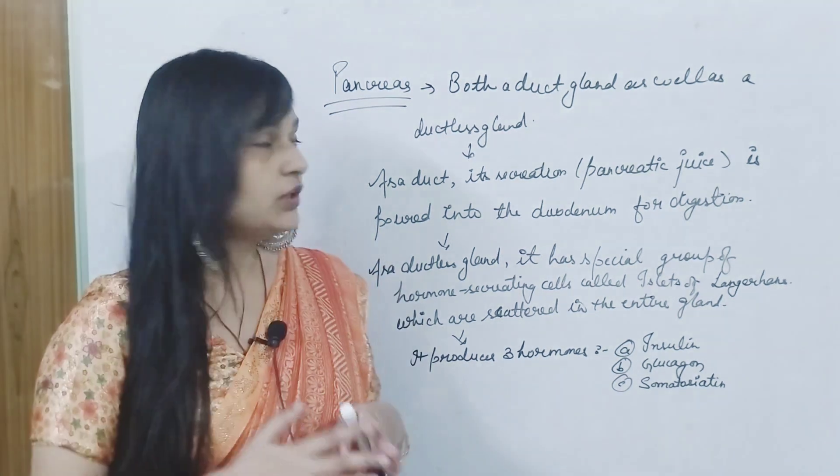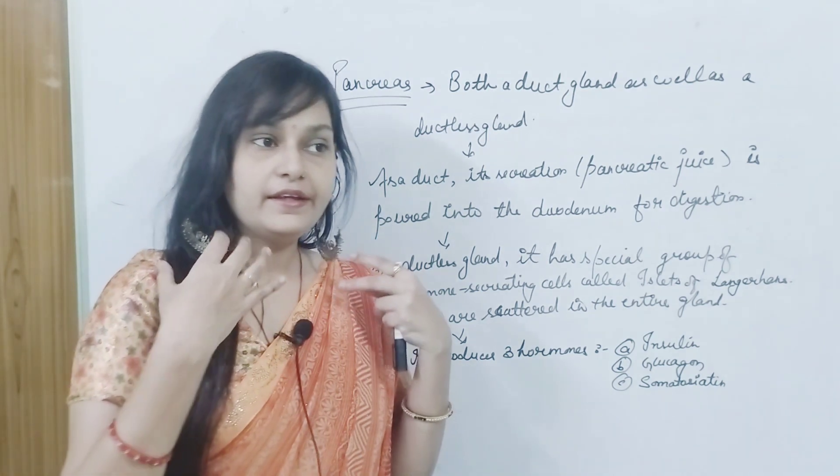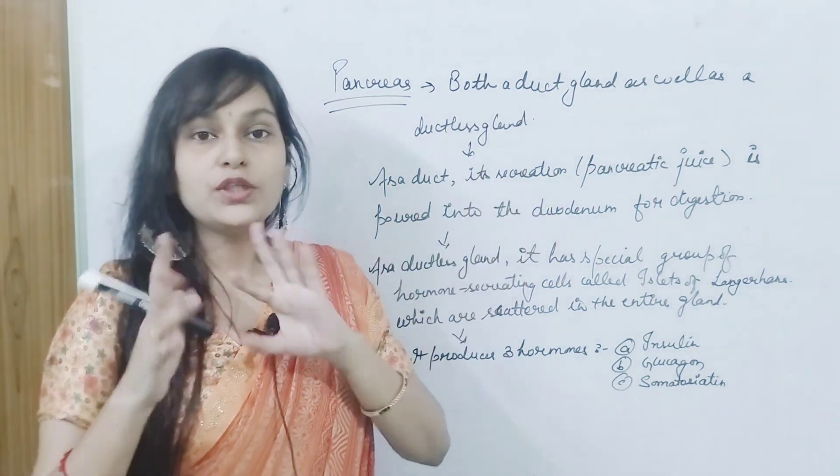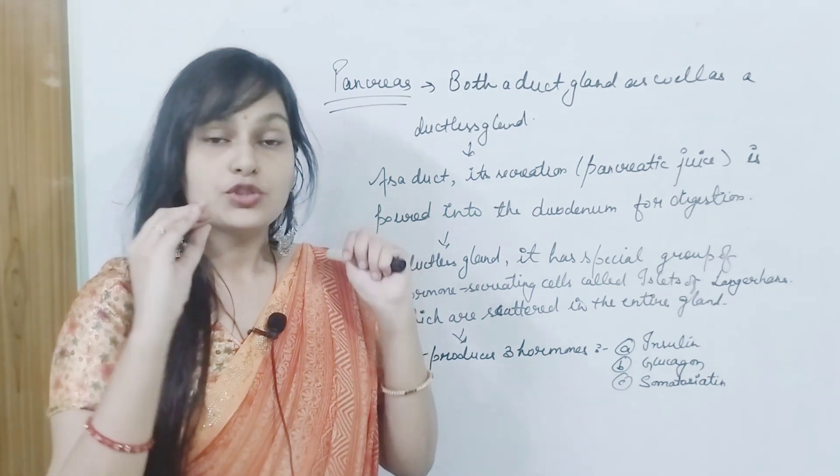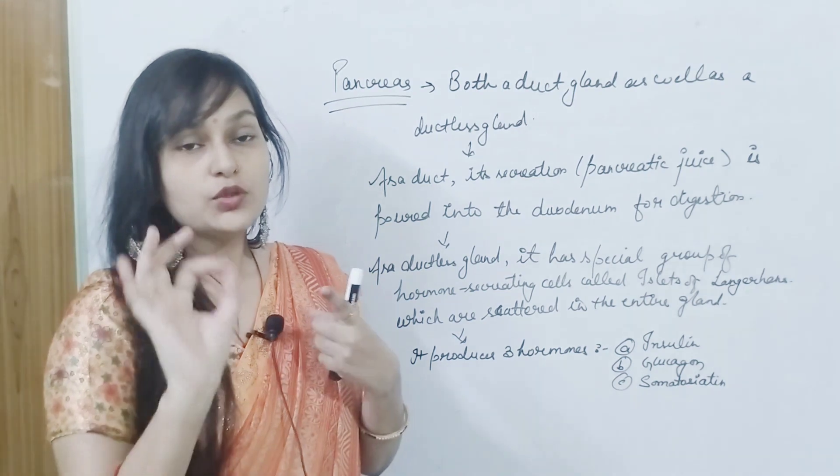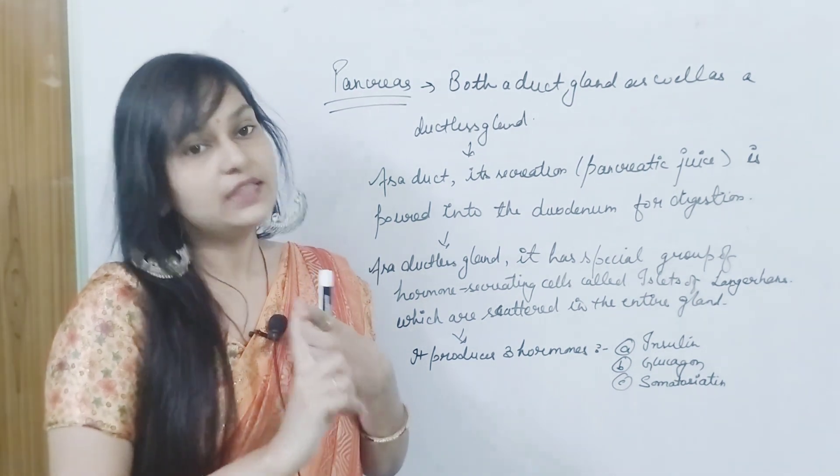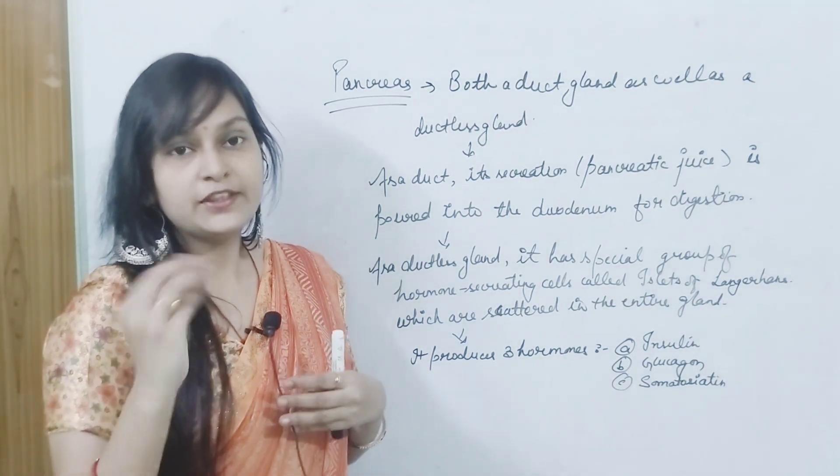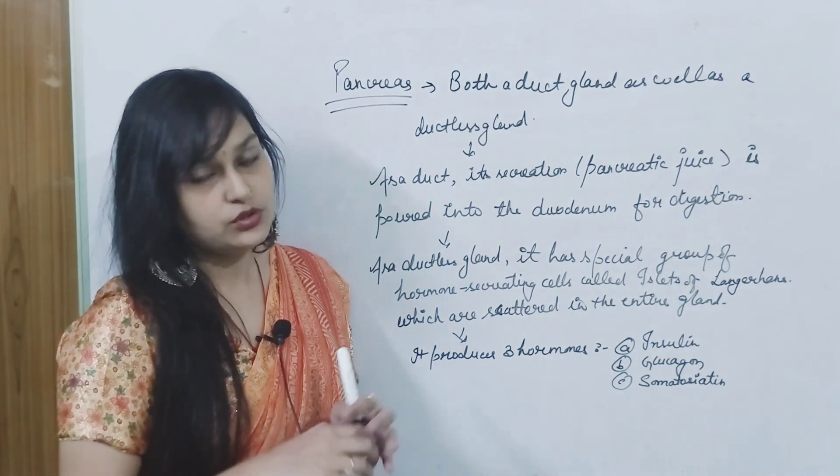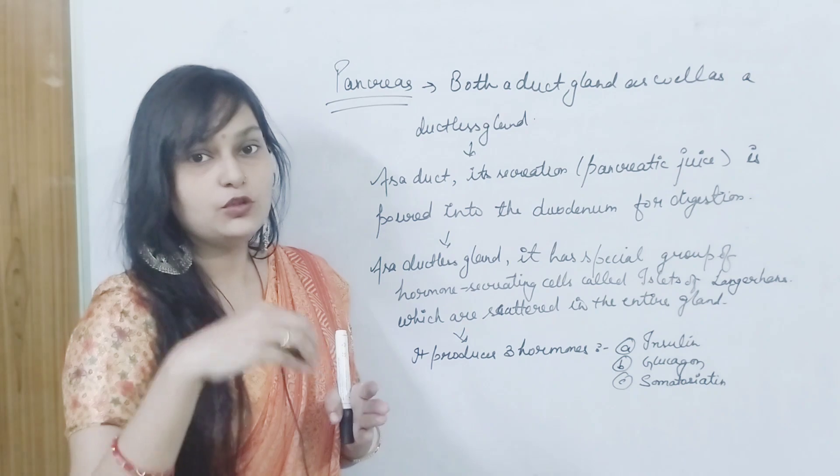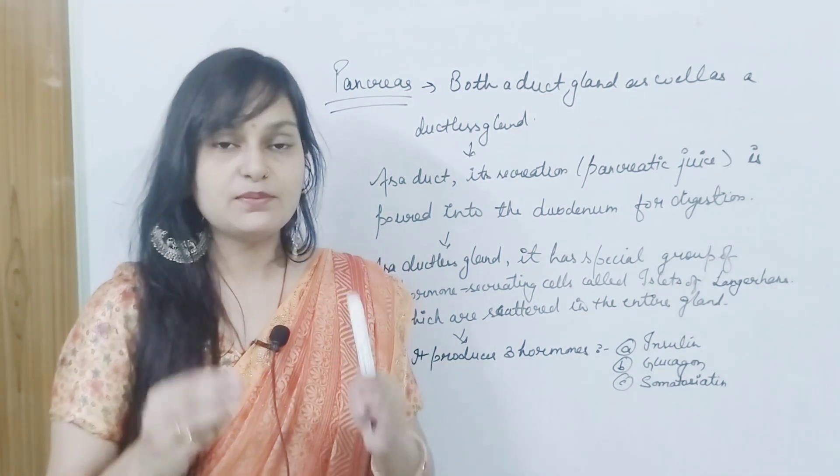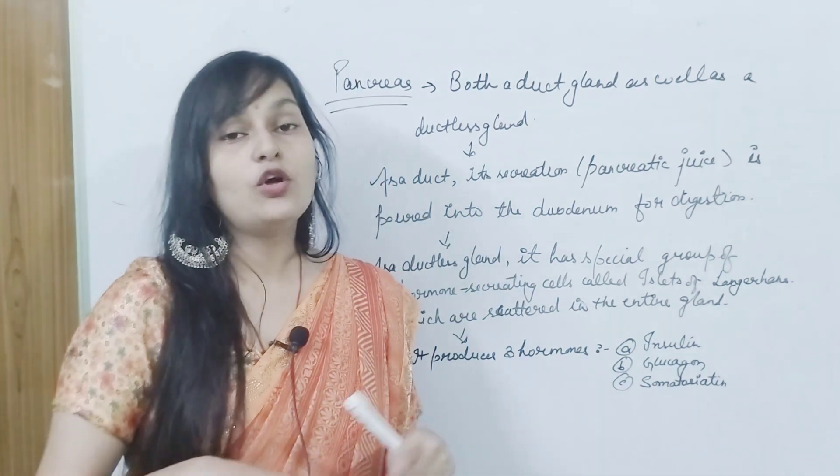So now we talk about pancreas. Pancreas works in both types of glands, such as duct gland and ductless gland. As a duct, it secretes pancreatic juice. It secretes the pancreatic juice through the duct and pours into the duodenum for digestion. In your stomach there is a part, the duodenum, it pours into the duct which is helpful for digestion.